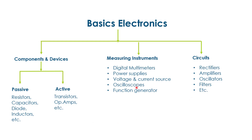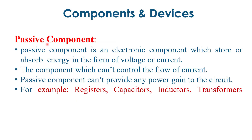All these devices, components, and circuits will be discussed. There are basically two types of components in electronics: active and passive. A passive component is an electronic component which stores or absorbs energy in the form of voltage or current. The passive component cannot control the flow of current, and it cannot provide any power gain to the circuit.